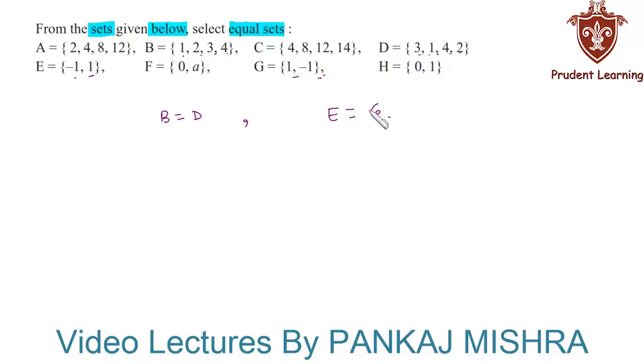Because all the elements of set B are the elements of set D and vice versa. Also, all the elements of set E are the elements of set G and vice versa. When you observe the remaining sets,